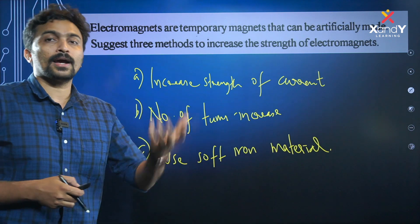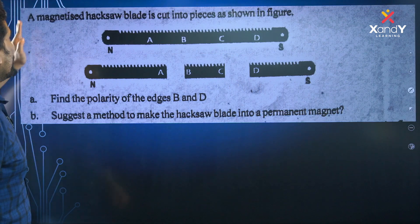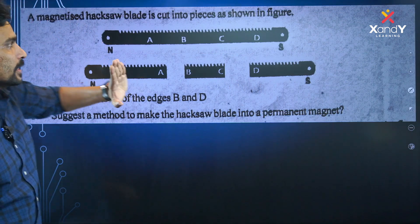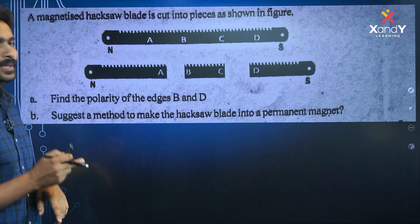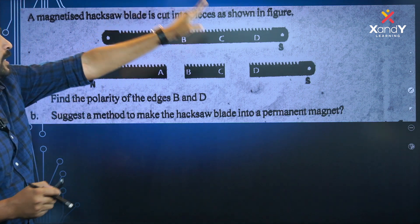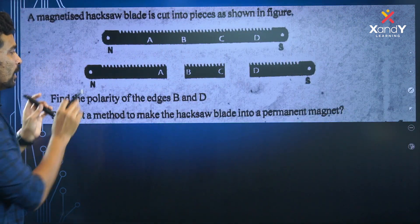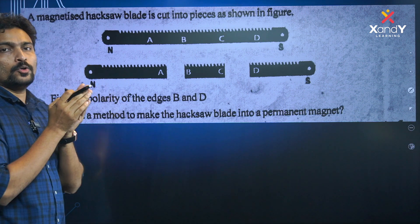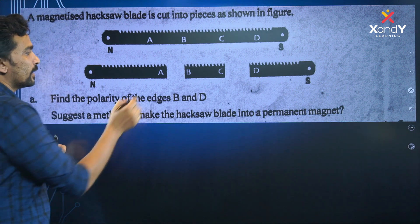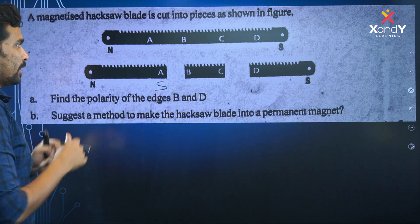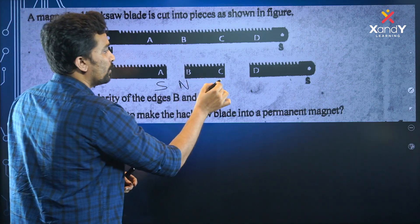Soft iron is easily magnetized. A hacksaw blade is cut into pieces as shown in the figure — three pieces. Find the polarity of edges B and D. North, south — north, north — south, south, south, north, south.